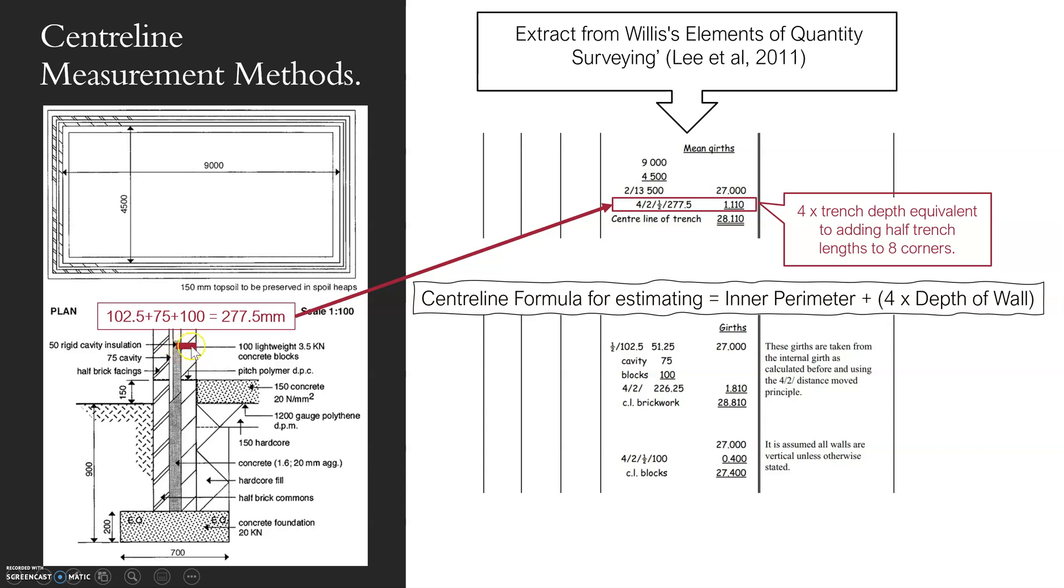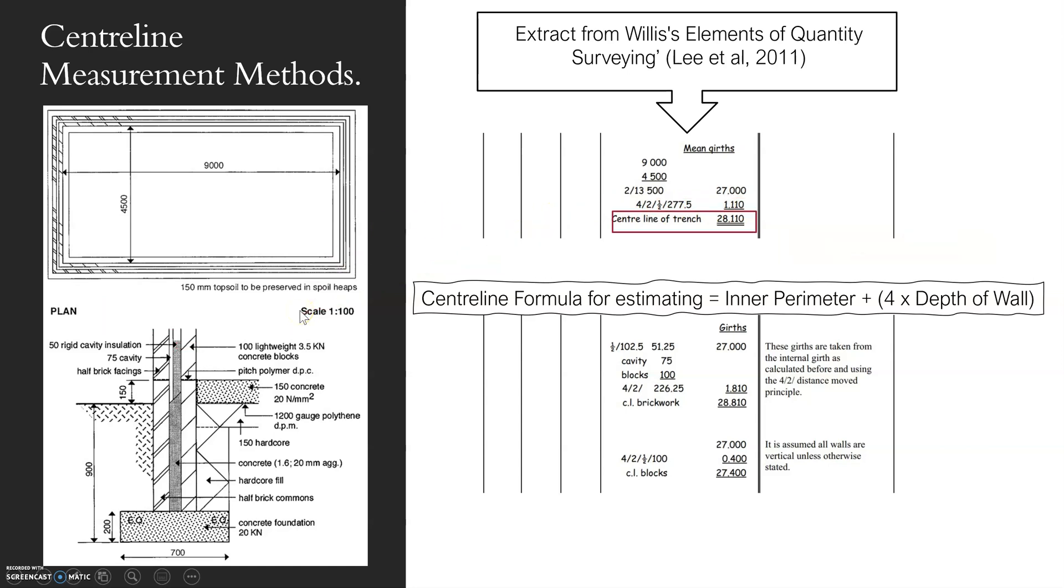You've got to push this perimeter, add on this extra length on every single corner - going out the way there, up the way and across the way. You've got to add for each corner twice, which is what this represents: four corners twice. You've got to add on half of the whole depth of the elements. That calculation will give you your centreline of trench.